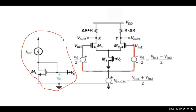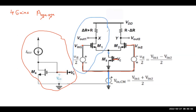There is a current mirror on the left connected to both sides at the same node, sourcing current from IREF. There are four important gain terms: ADM-DM, ADM-CM, ACM-DM, and ACM-CM. For ADM-DM, we apply a differential input with no common mode signal, then use the half-circuit approach — the middle node becomes ground differentially.